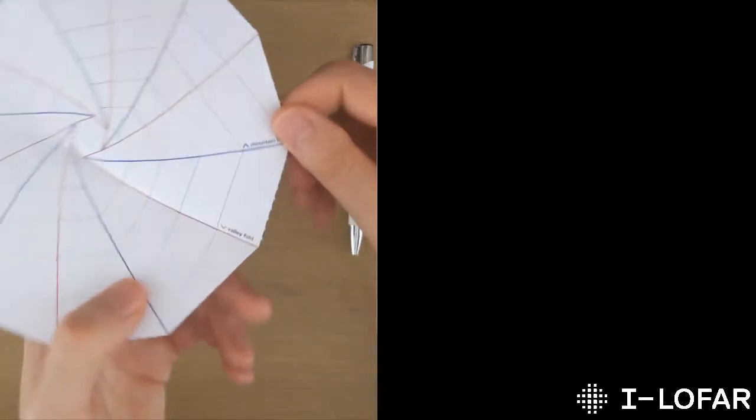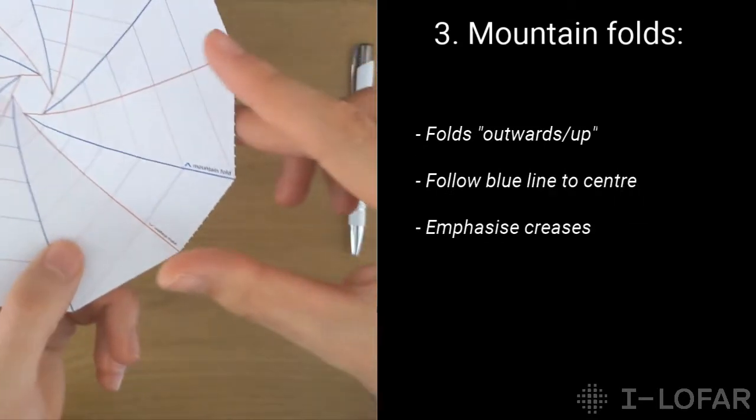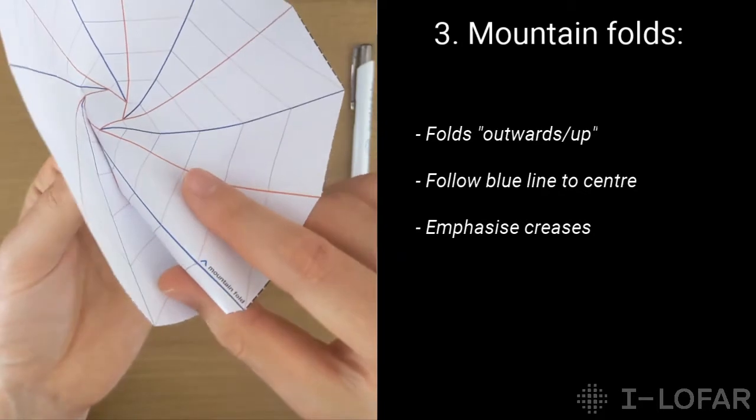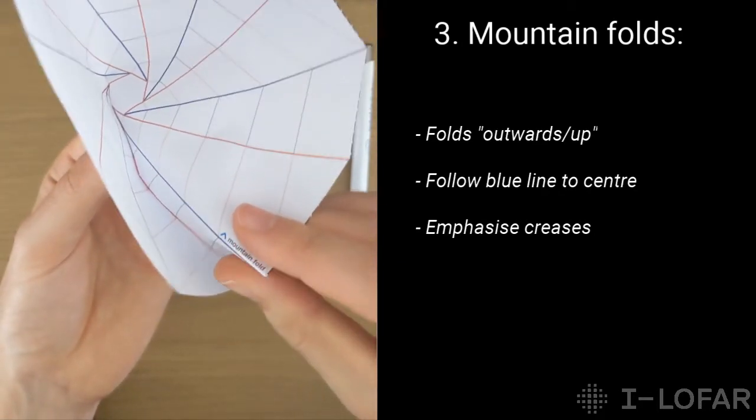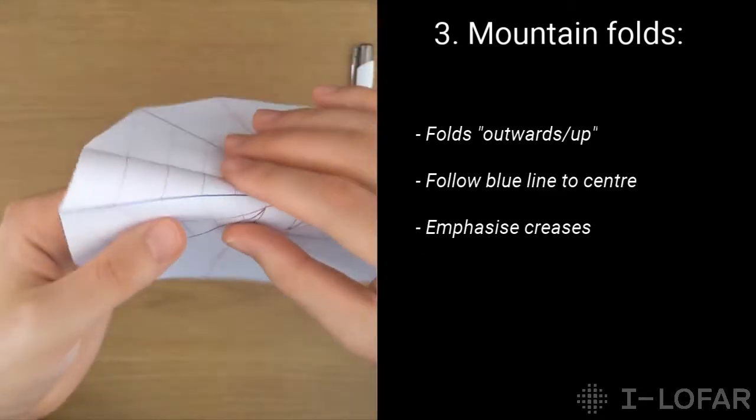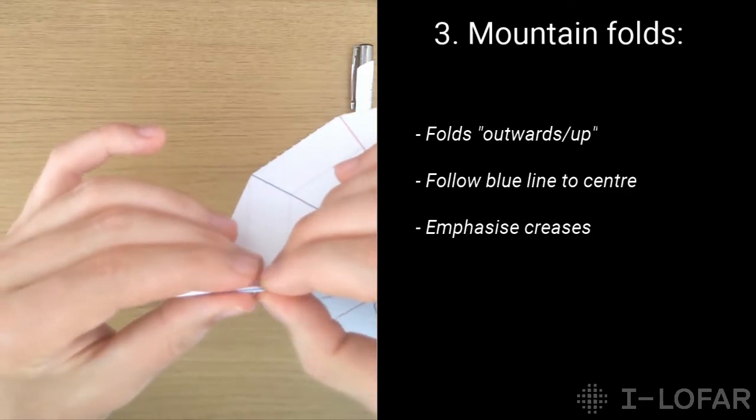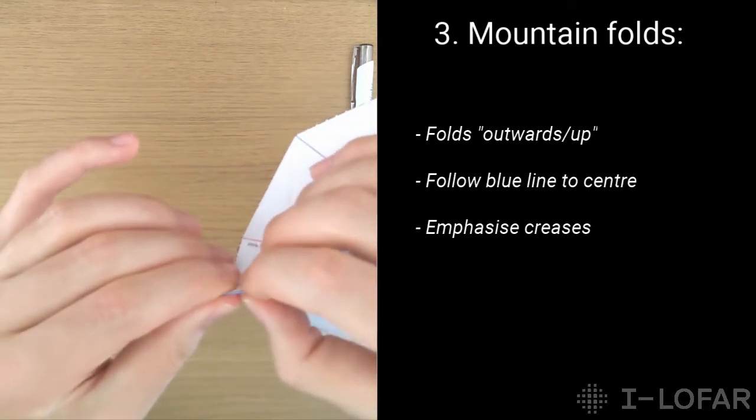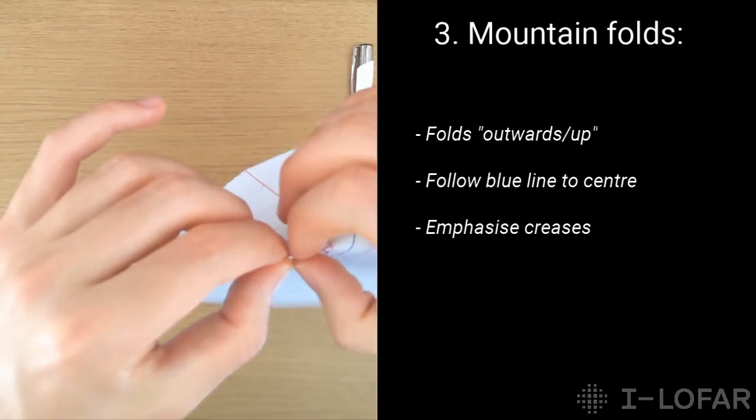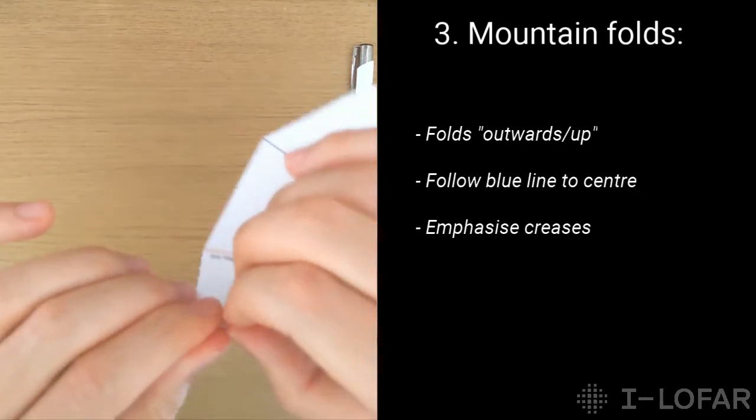Once you're done the valley fold, you can move on to the next fold, which is the mountain fold. Now unlike the valley fold, this actually folds outwards, so up. You can use your two fingers to really just push it in. The mountain folds tend to be a lot easier than the valley folds. And again, same kind of principle, you want to go along the line. Take your time doing this, and follow the line all the way down, and really crease it.